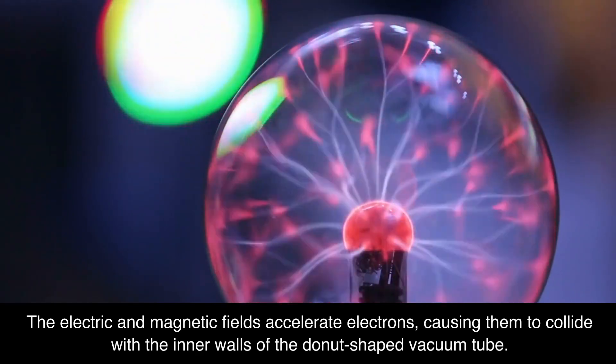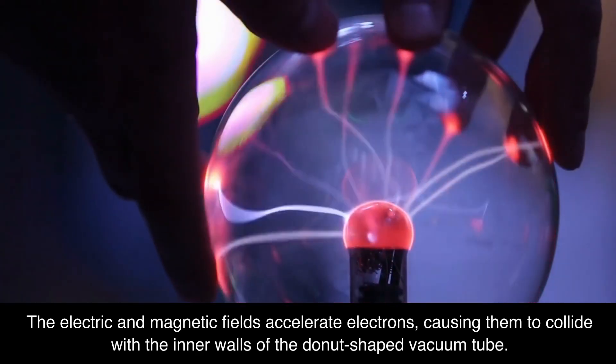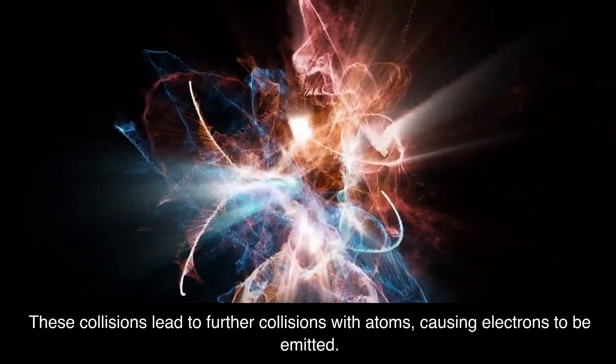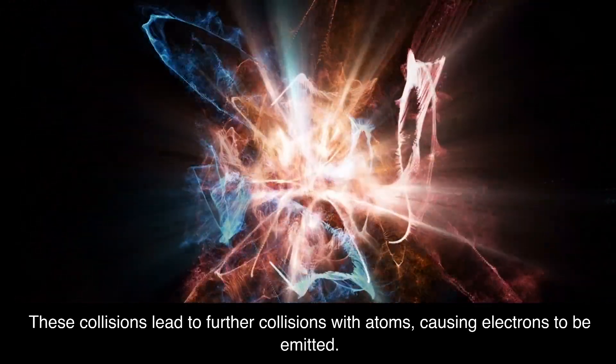The electrons collide with the inner walls of the donut-shaped vacuum tube. These collisions lead to further collisions with atoms, causing electrons to be emitted.